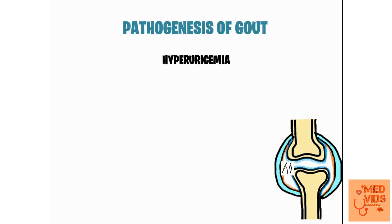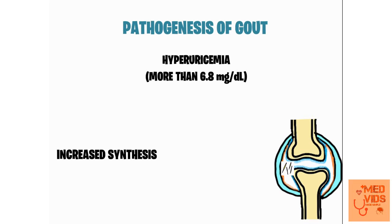The principal thing which happens in gout is hyperuricemia, meaning elevated levels of uric acid in the patient's blood. If the level of uric acid goes above 6.8 mg per deciliter, it is called hyperuricemia and it can predispose the patient to gout. Hyperuricemia can occur because of two reasons: increased synthesis of uric acid, which can occur in conditions of increased cellular turnover or high protein diet, and decreased excretion of uric acid due to renal failure or other conditions.